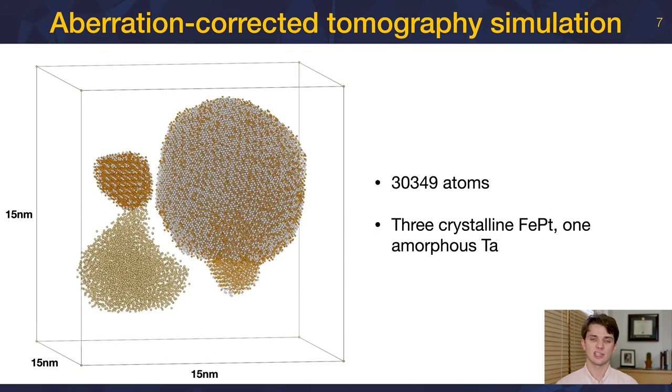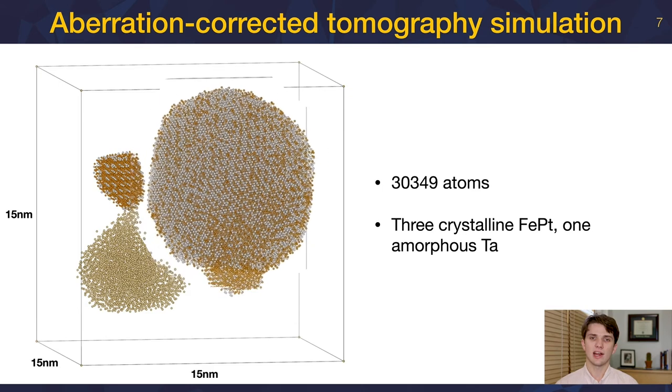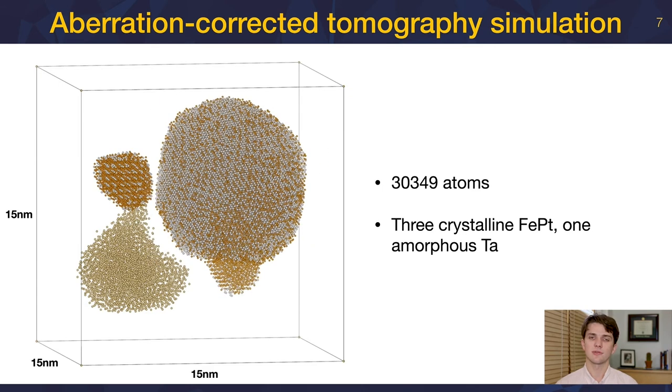To validate the use of aberration-corrected tomography, we turn to multislice simulations. Shown here are the XYZ coordinates of the object we use. It incorporates three crystalline iron platinum nanoparticles, experimentally reconstructed by a collaborator, and an amorphous tantalum nanoparticle with computed atomic coordinates. This object contains over 30,000 atomic coordinates, spanning 15 nanometers in three dimensions.